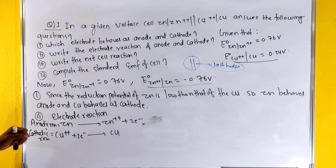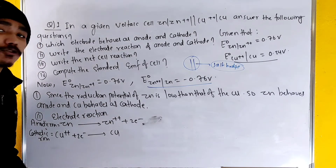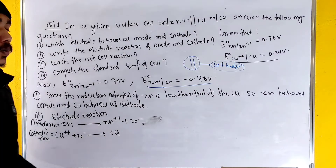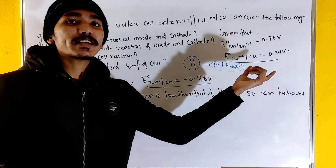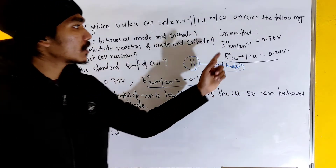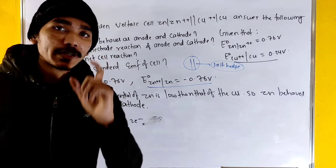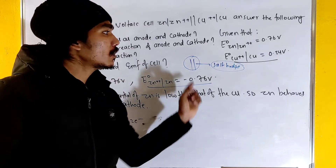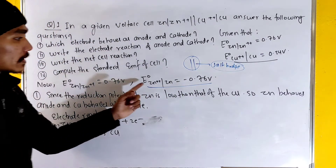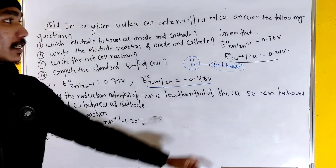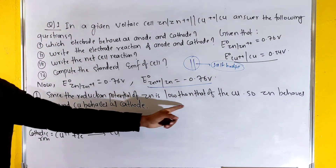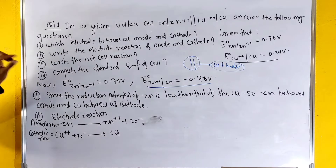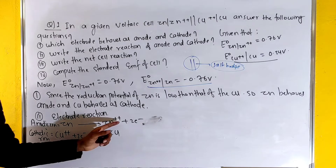The anodic reaction is: Zn → Zn²⁺ + 2e⁻. If you want to write the reduction potentials, the lower one is the anode. The reduction potential at the anode is minus 0.76 volt. So zinc is the anode and copper is the cathode. The net cell reaction: the anodic reaction is Zn → Zn²⁺ + 2e⁻.